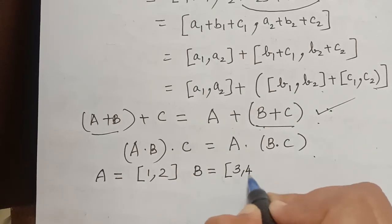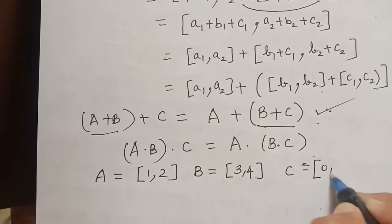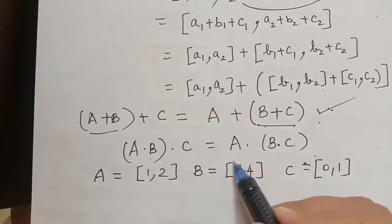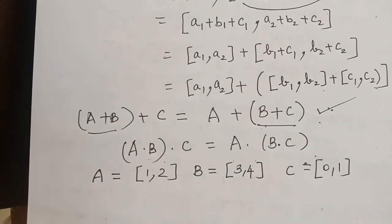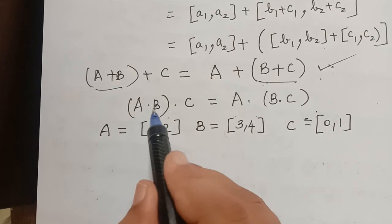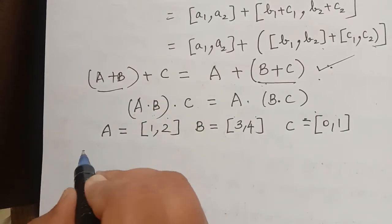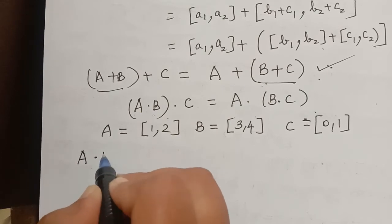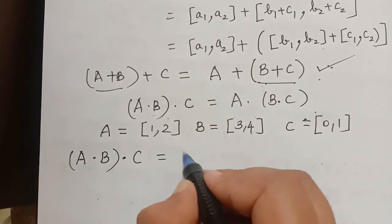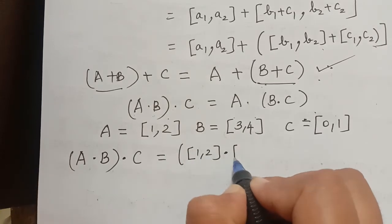We take A to be equal to closed interval [1, 2], B to be equal to closed interval [3, 4], and C to be equal to closed interval [0, 1]. So a1=1, a2=2, b1=3, b2=4, c1=0, c2=1. Now first we will consider the left hand side, that is (A dot B) multiplied with C.